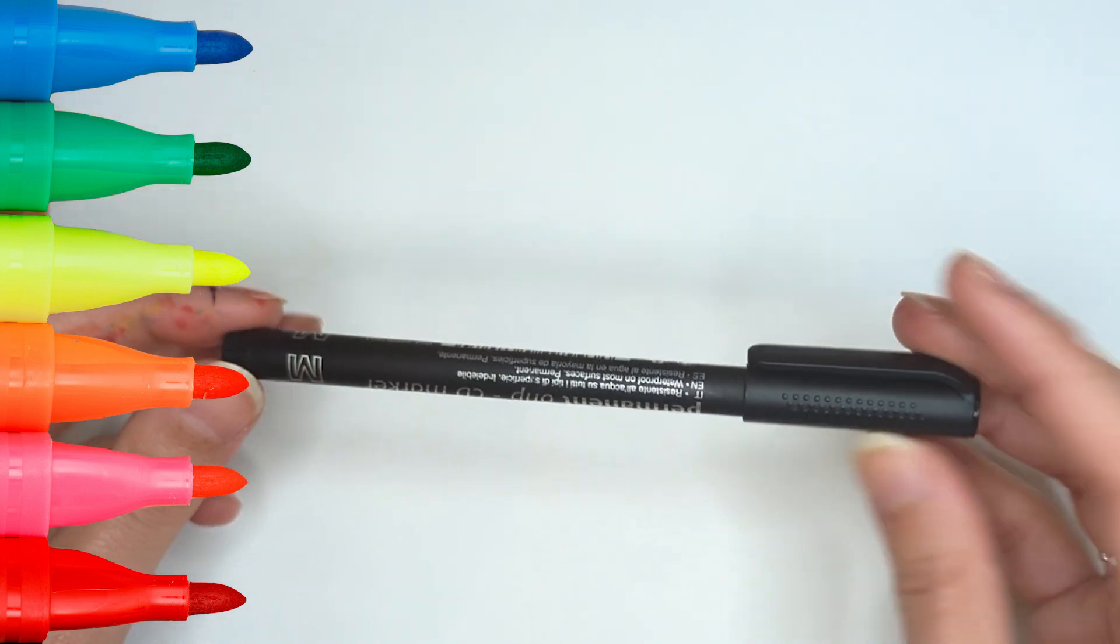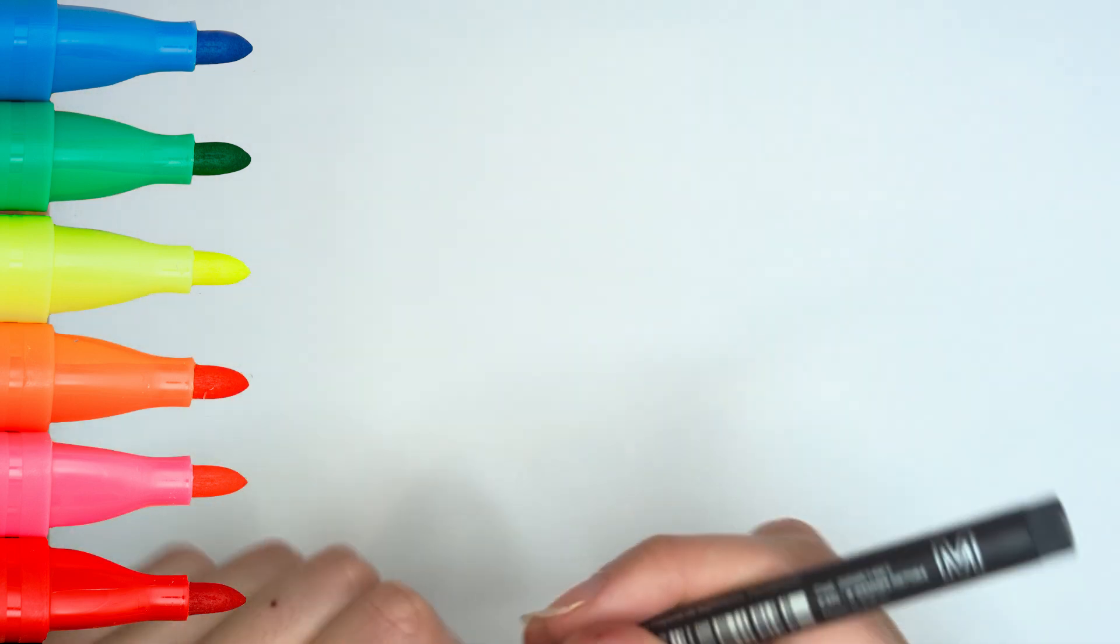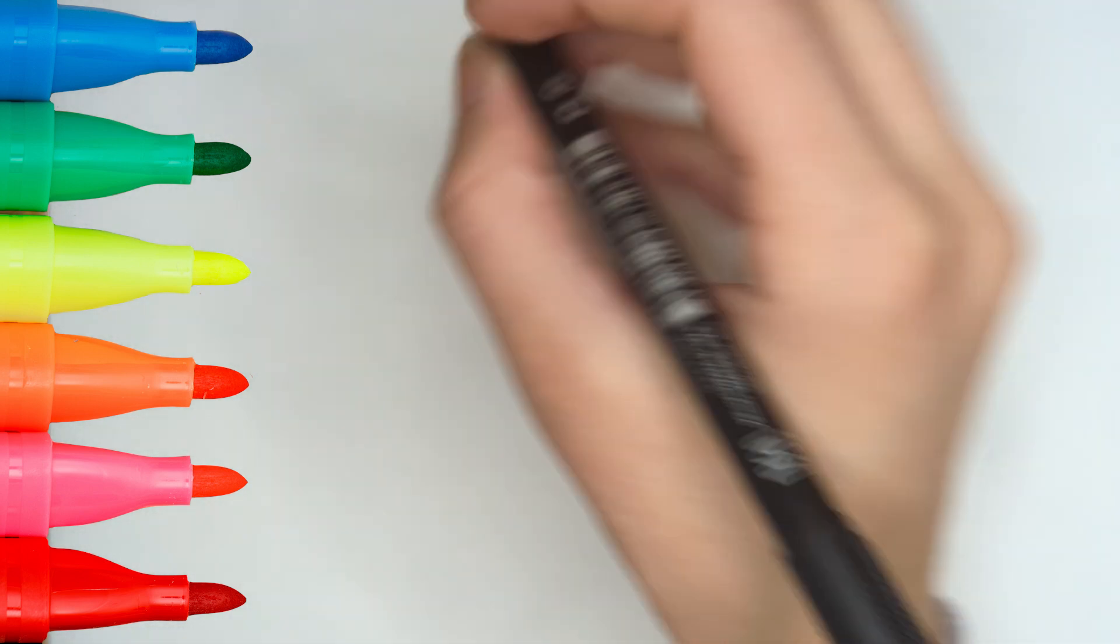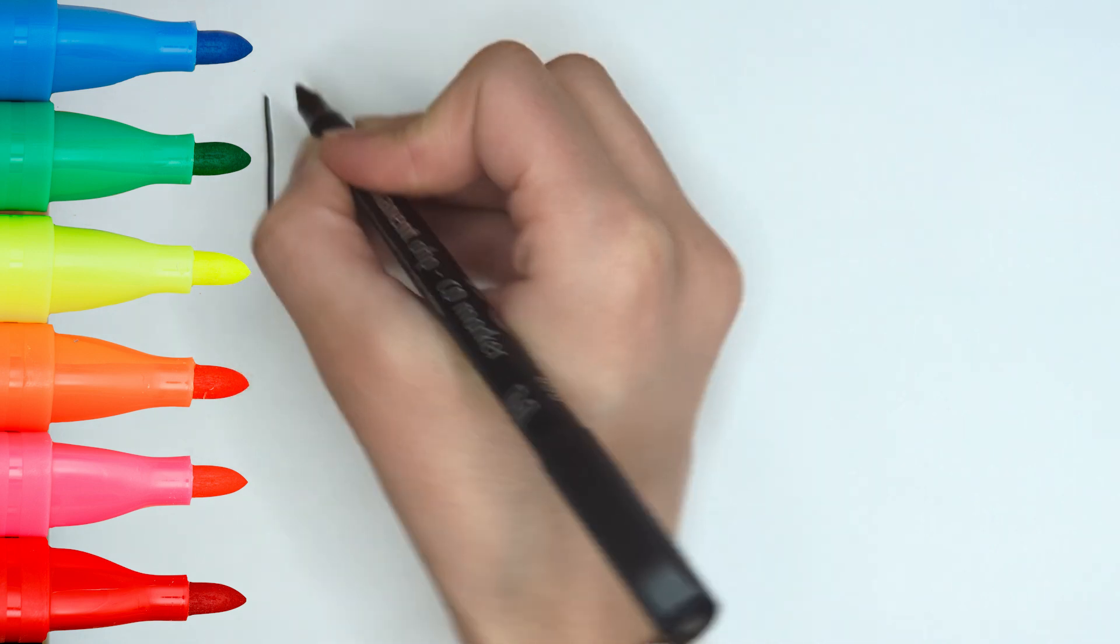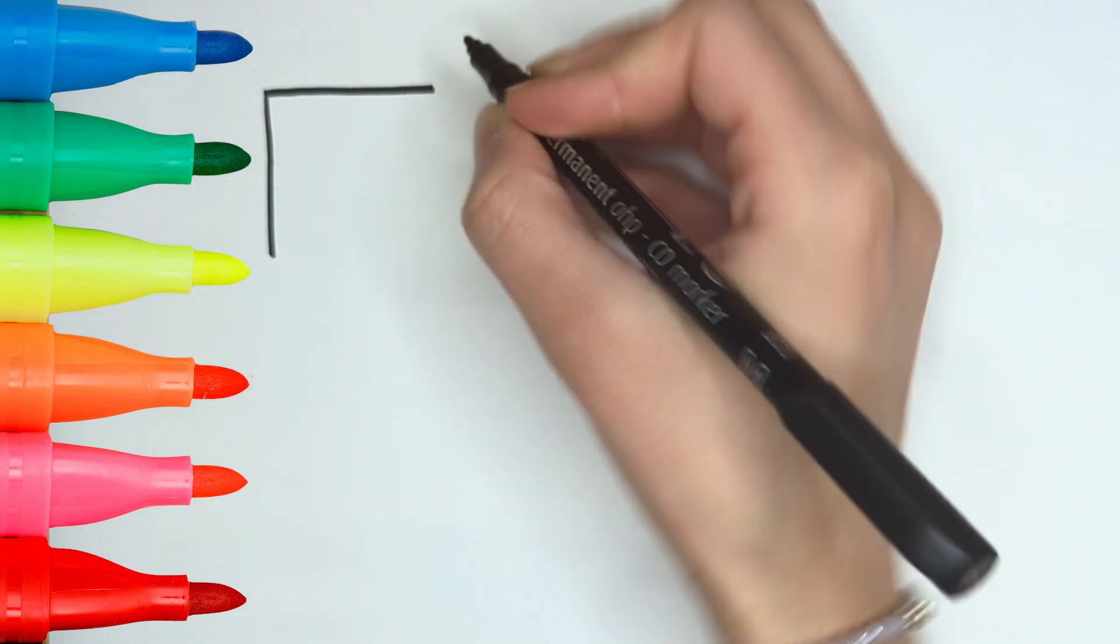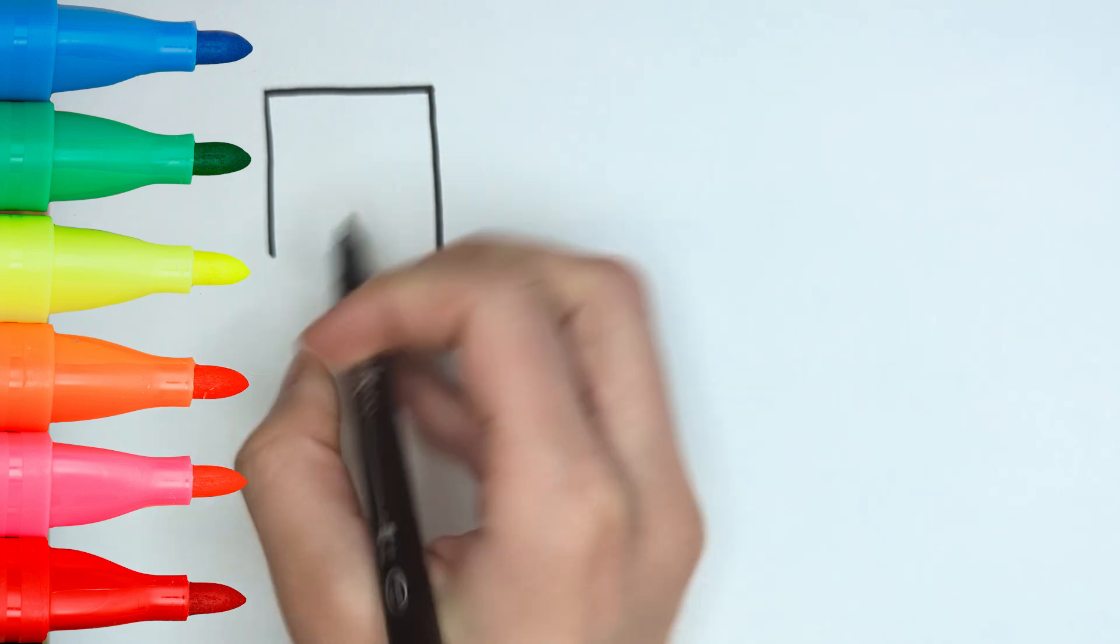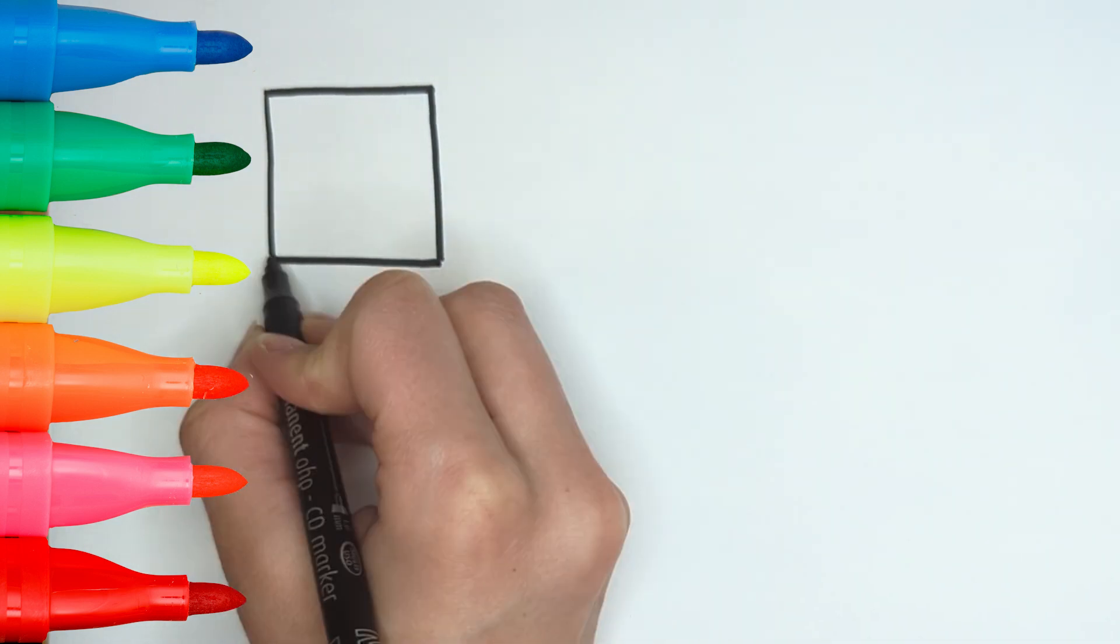We need a black marker! Square! This is a square!